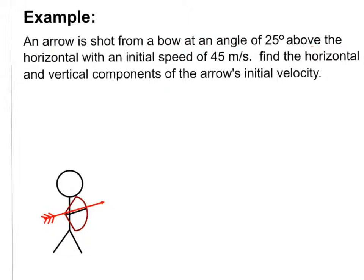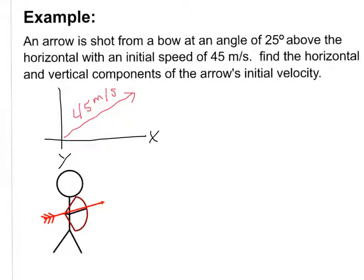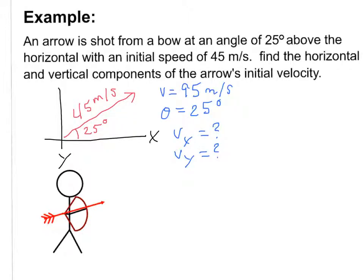Here's an example: an arrow is shot from a bow at an angle of 25 degrees above the horizontal with an initial speed of 45 meters per second. Find the horizontal and vertical components of the arrow's initial velocity. I set up an xy-axis with the arrow representing the shot at 25 degrees above horizontal. I know the velocity is 45 meters per second and theta is 25 degrees; the two components are what I need to find.